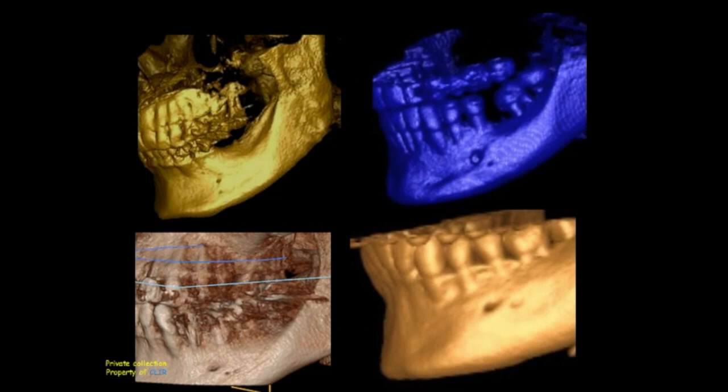Whenever we have two mental foramina, they can be on one plane or two different planes. We have to locate them very carefully, especially when they are not on the same plane — because being away from the first one when placing an implant does not mean that you are away from the second one.